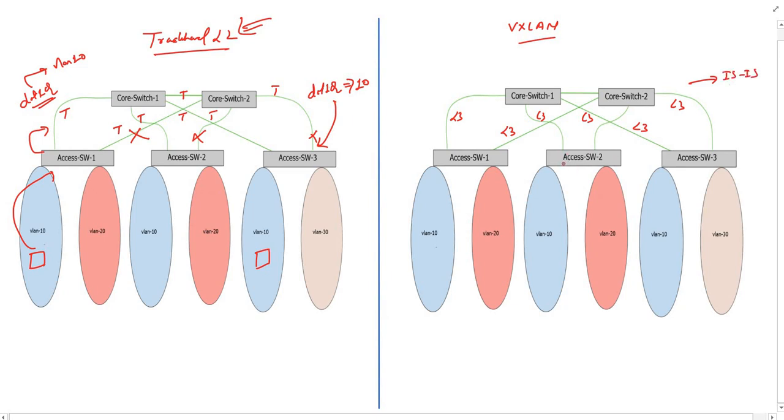As a result, we have full layer 3 connectivity between switches, access switches and core switches. But now, there is a very basic problem that exists in this network.